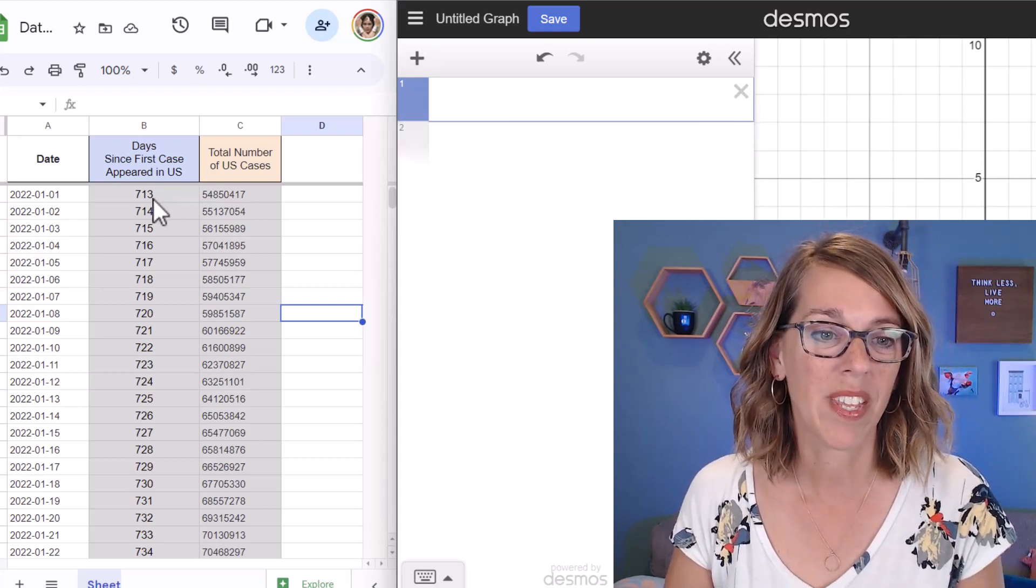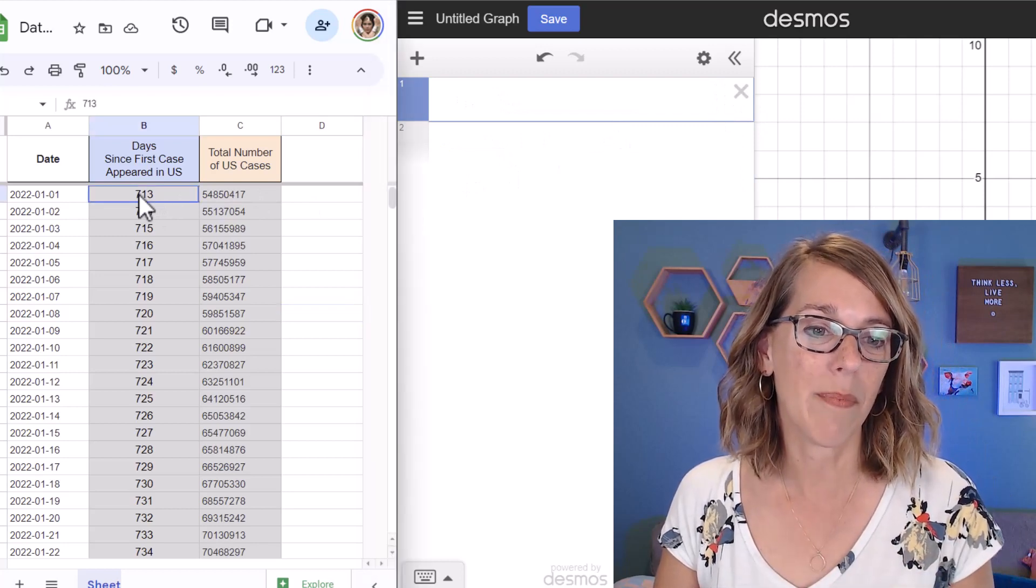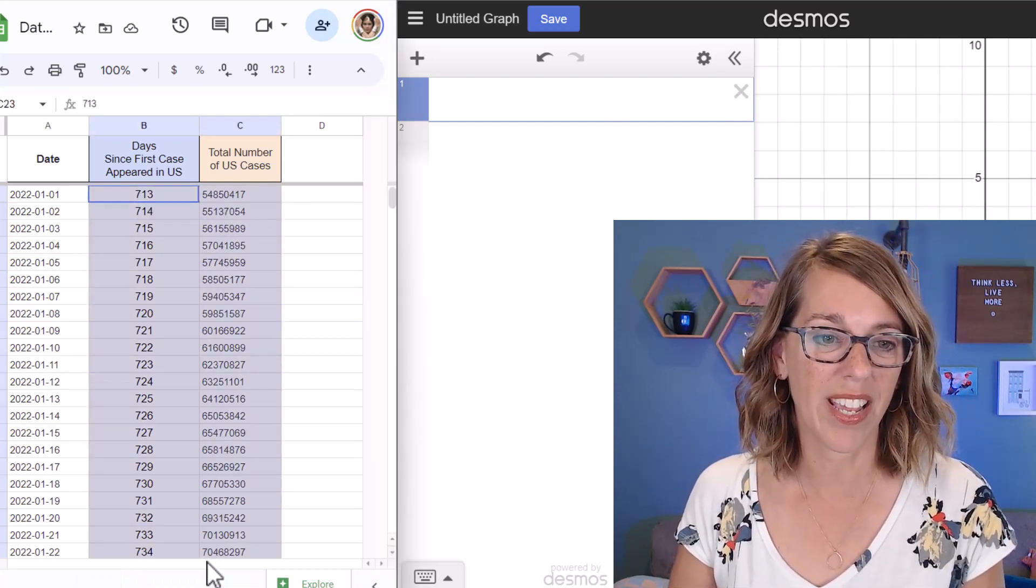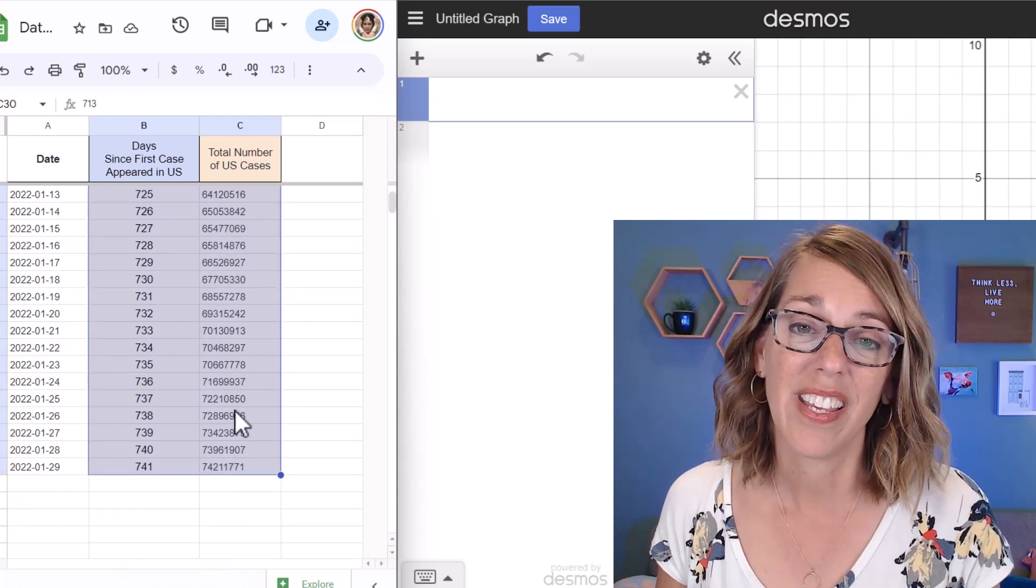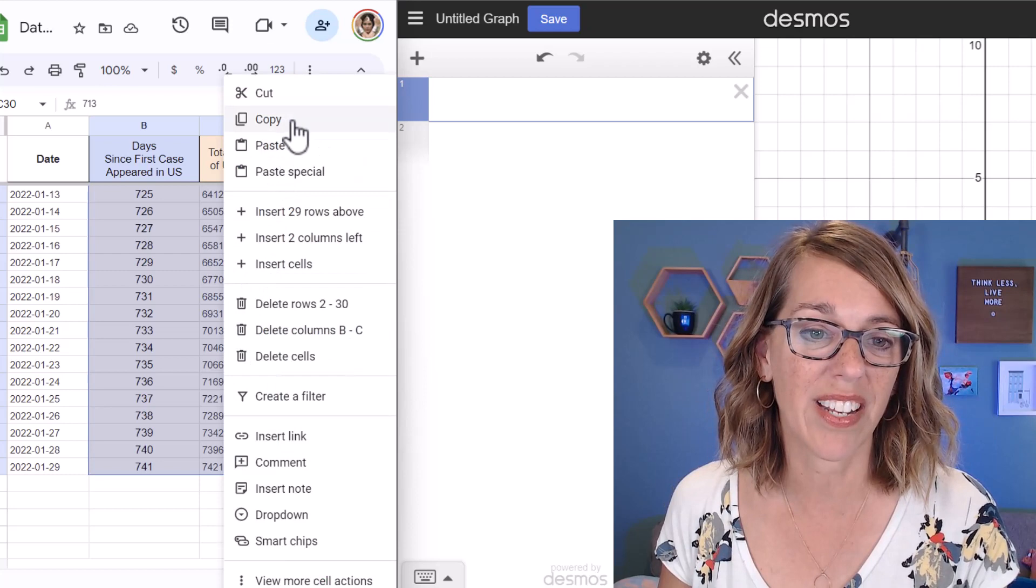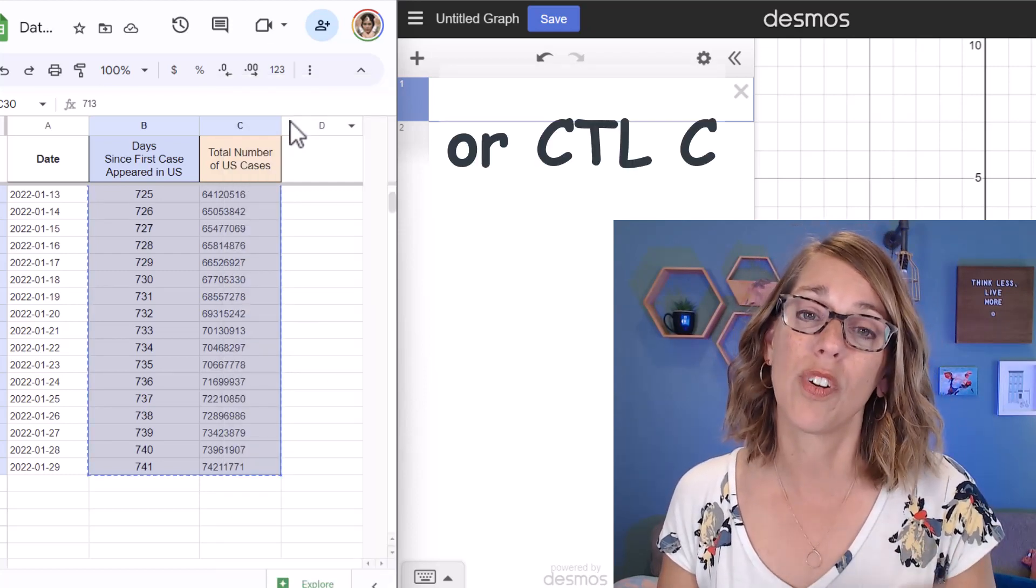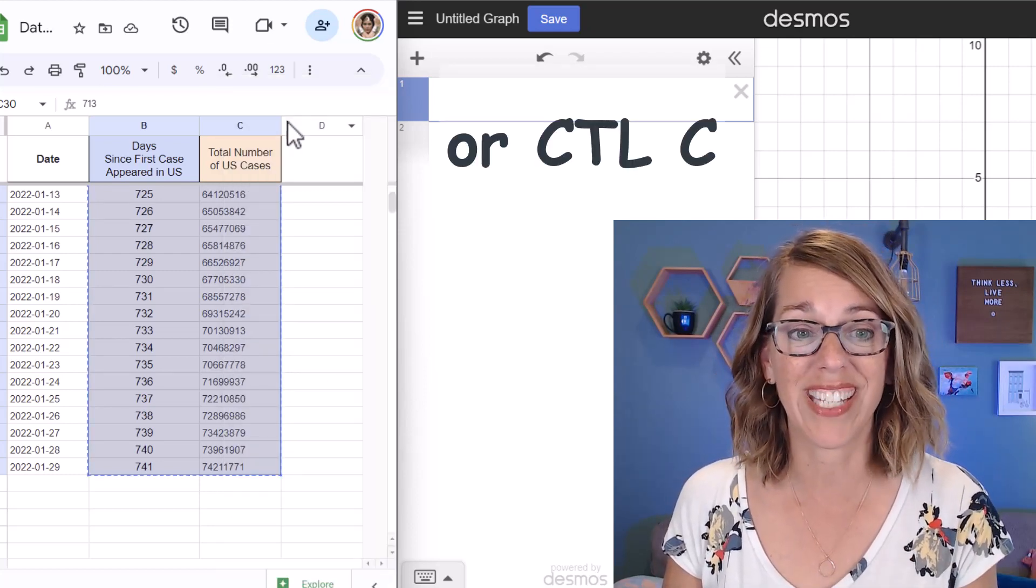Instead, we're going to copy. So I'm going to highlight all of my data by clicking, holding, and dragging through the first data value to the very last one, and then I'm going to copy. You could either right-click and choose copy, or you can do Control followed by the letter C.